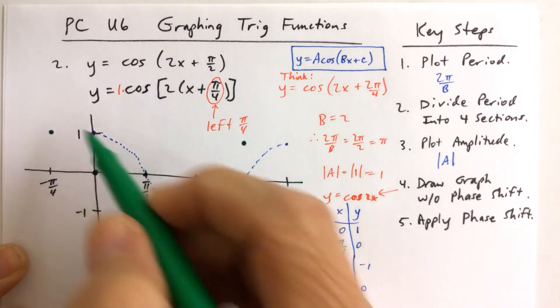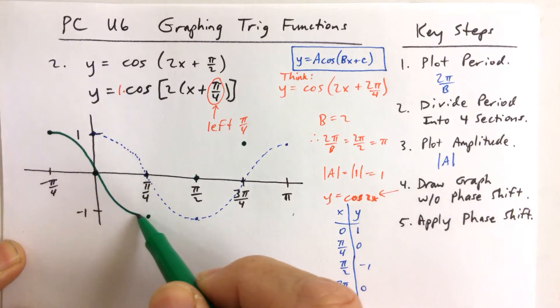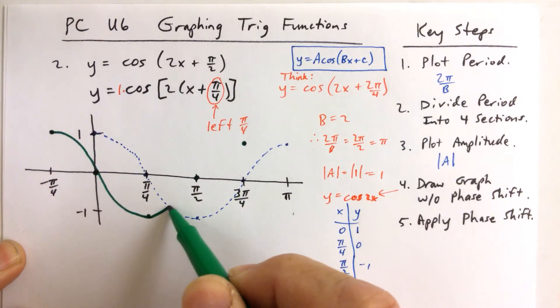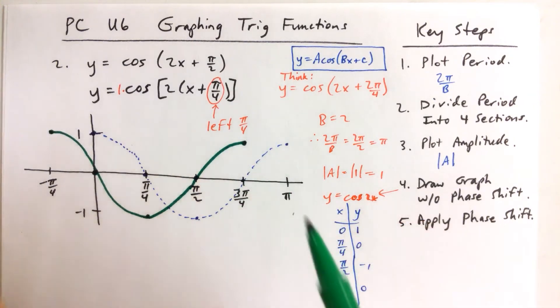Now, the graph has to look the same, so now you're going to draw it solid because we don't have any more transformations. We have a horizontal transformation. We don't have a vertical transformation. That's it.